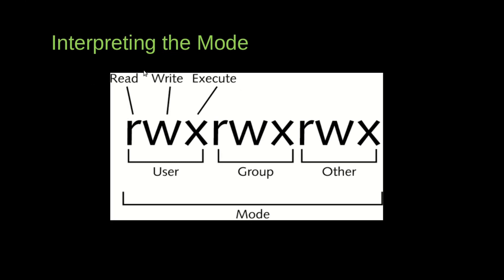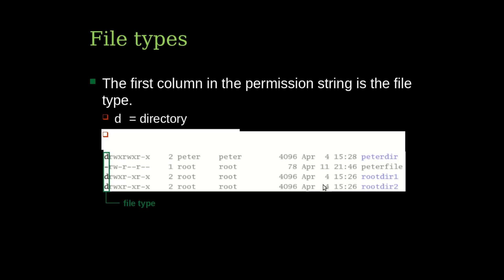In the permission string, r stands for read, w stands for write, and x stands for execute. The first three permissions are for the owner or user who created the file, the second set is for the group owner, and the last set is for other members. The first character indicates the file type: d for directory, or a dash for a regular file like a text file or doc file.